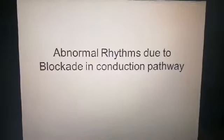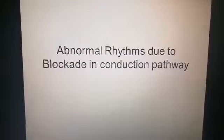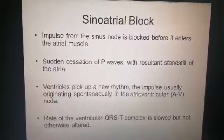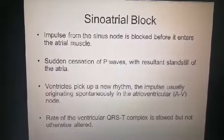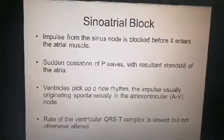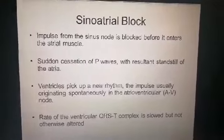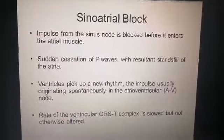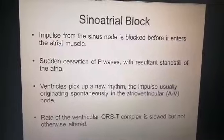Now we move towards abnormal rhythms due to blockage in the conduction pathway. There are mainly two types of blocks: the first is a sinoatrial block and the other is an atrioventricular block. This is the main classification or main division of blocks.